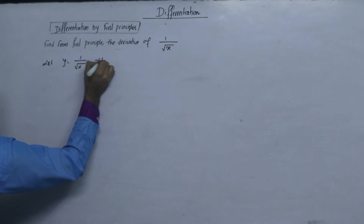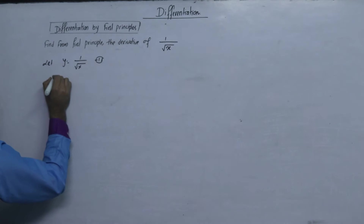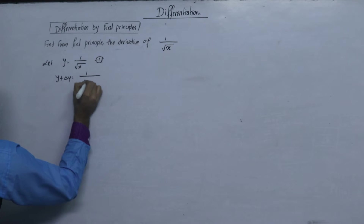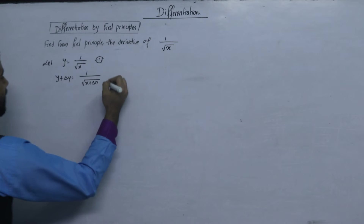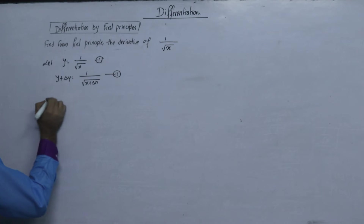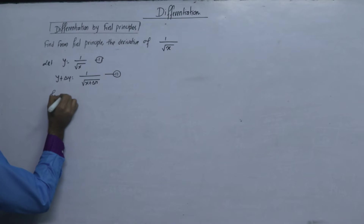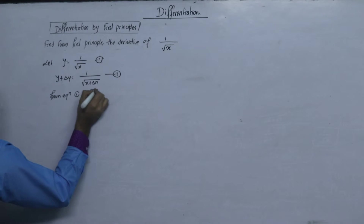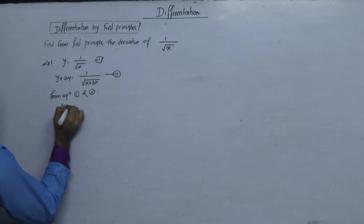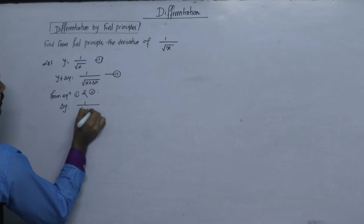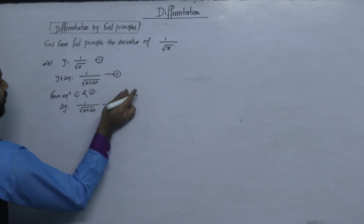The first equation is y equals 1 upon root under x. The second equation is y plus delta y equals 1 upon root under x plus delta x. Subtracting, delta y equals 1 upon root under (x plus delta x) minus y.